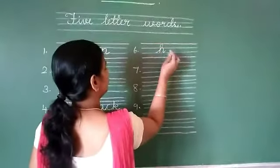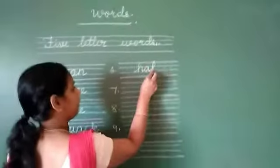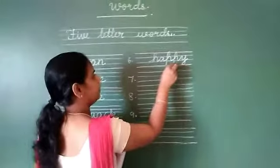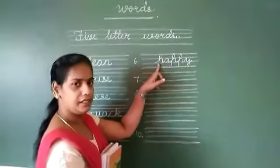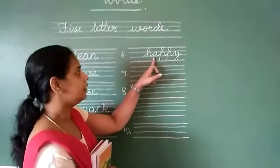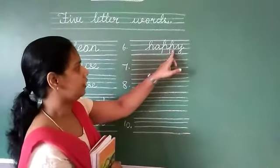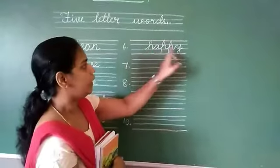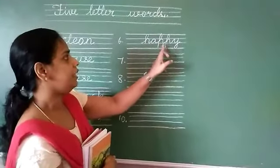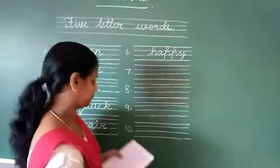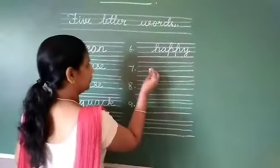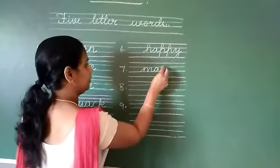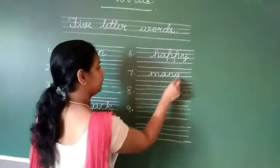Next one is H-A-P-P-Y. How will you read this children? The sound of letter H is H. P sound P. Again one more P. We have Y sound, here it becomes E. So H-A-P-P-Y: Happy.